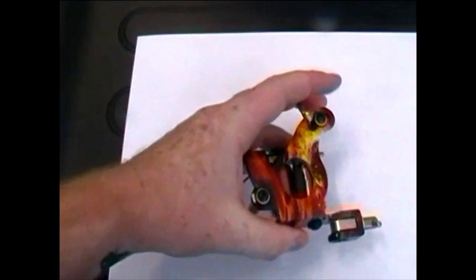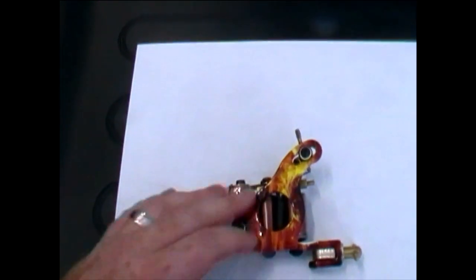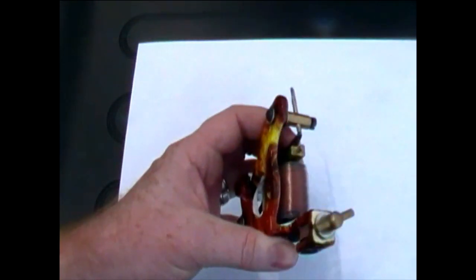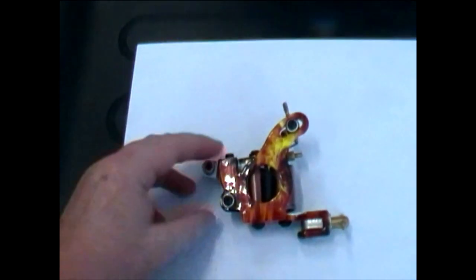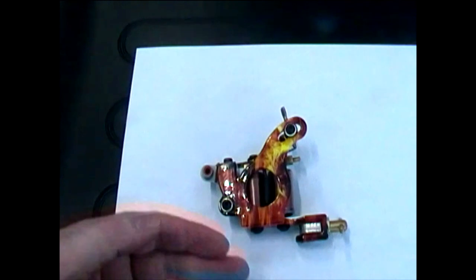So I'll rig this up now and show you it running. This is what I use for a liner a lot. And this machine, it just pops in those lines. I talk about the Cheyenne pen popping in those lines for doing one pass lines.